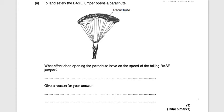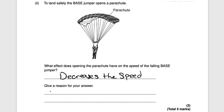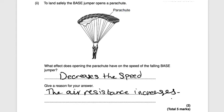Next question: to land safely, the base jumper opens a parachute. What effect does opening the parachute have on the speed of the falling base jumper? Opening the parachute increases the air resistance and decreases the speed. The reason for this is that air resistance increases, and that would be worth two marks.